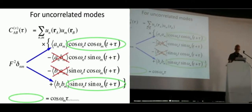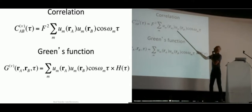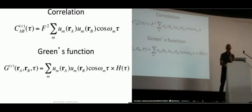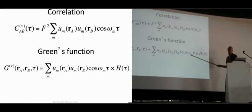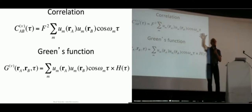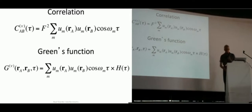Now we're almost done. The cross-correlation of the two wave fields consists of the mode at one sensor, times the mode at the other sensor, times the cosine of the mode frequency times the lag time tau. Comparing that with the Green's function — which also has a sum of modes, the mode at the observation point, the mode at the excitation point, the cosine at each mode frequency, times the Heaviside function — they are the same. So by cross-correlating the noise field at different sensors, you get the Green's function, at least for positive times.